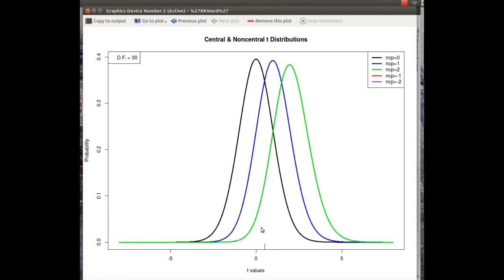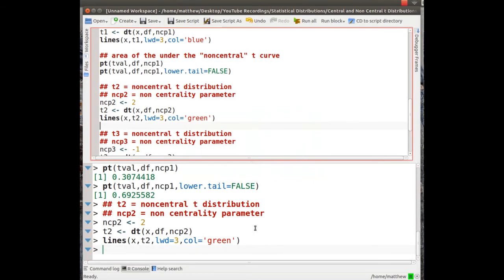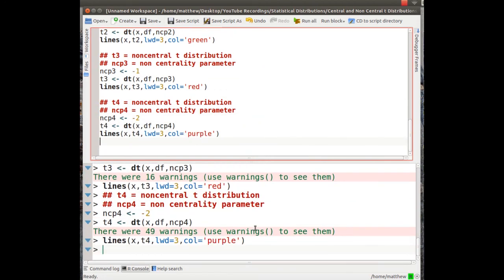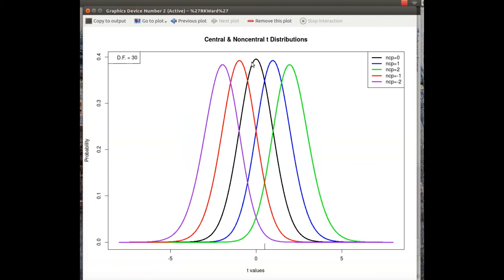And again, we could calculate the area under that using the pt function in R. But let's look at some negative centrality parameters, and go back to here. If we have a non-centrality parameter of negative 1, it's shifted to the left. And negative 2, it's shifted to the left again. And again, this is important when you're calculating power and sample size for a t statistic.